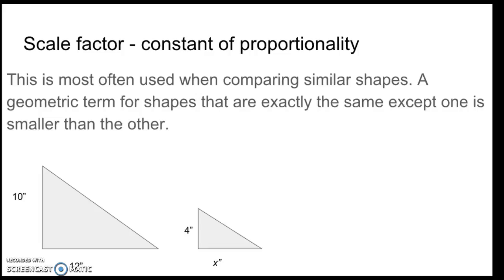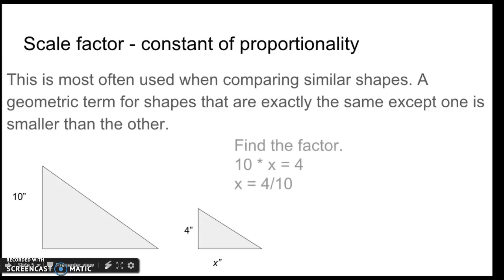While the triangle on the right is 4 inches up and down. And we don't know how many inches are across. But they're proportional. So, we can find the scale factor. Well, 10 times what number equals 4? So, 10x equals 4. If I divide both sides by 10, instead of 10x's I have 1x. And then 4 divided by 10 is the fraction 4 tenths.